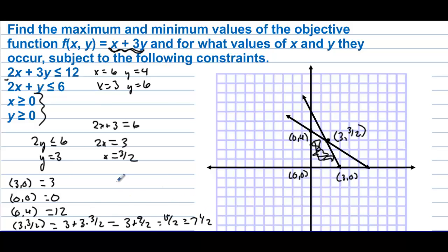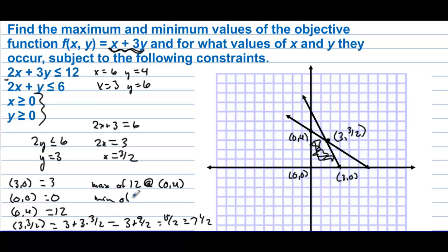So (3/2, 3) is neither the min nor the max. We have a maximum of 12 at the point (0, 4) and a minimum of 0 at (0, 0).